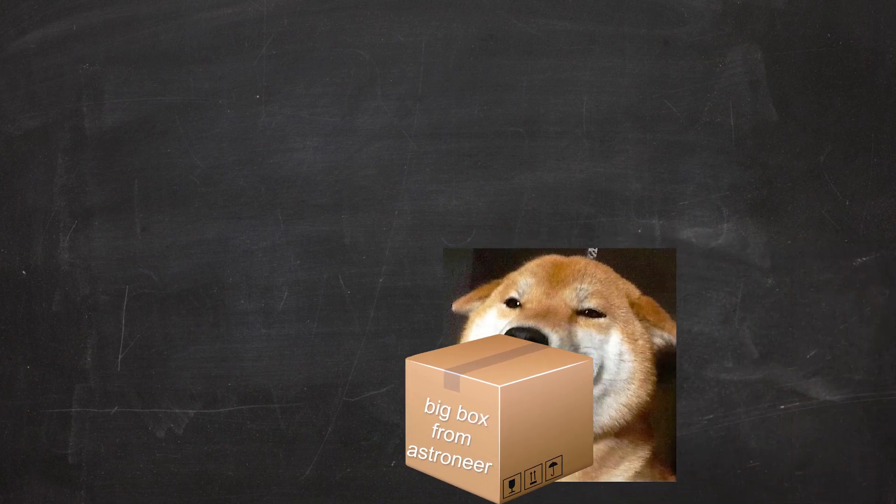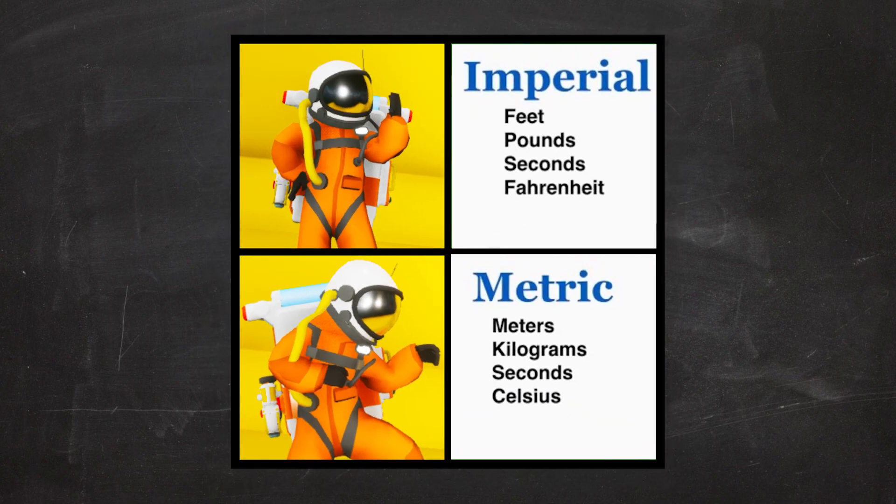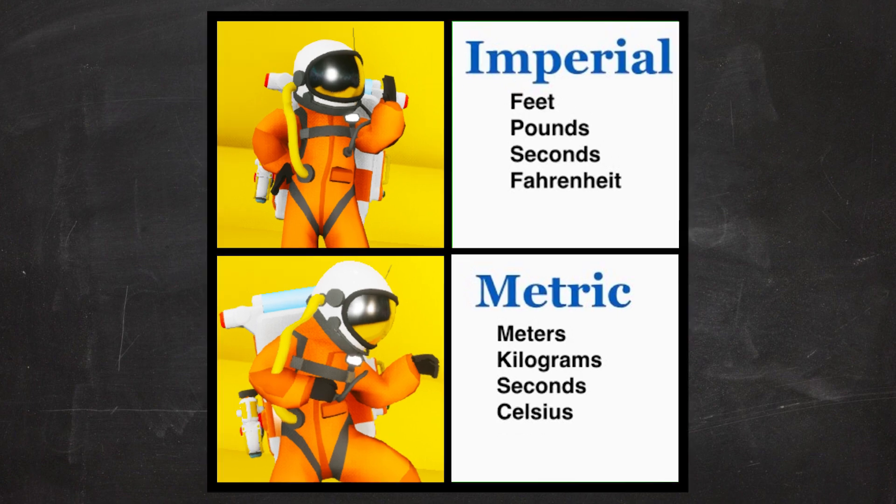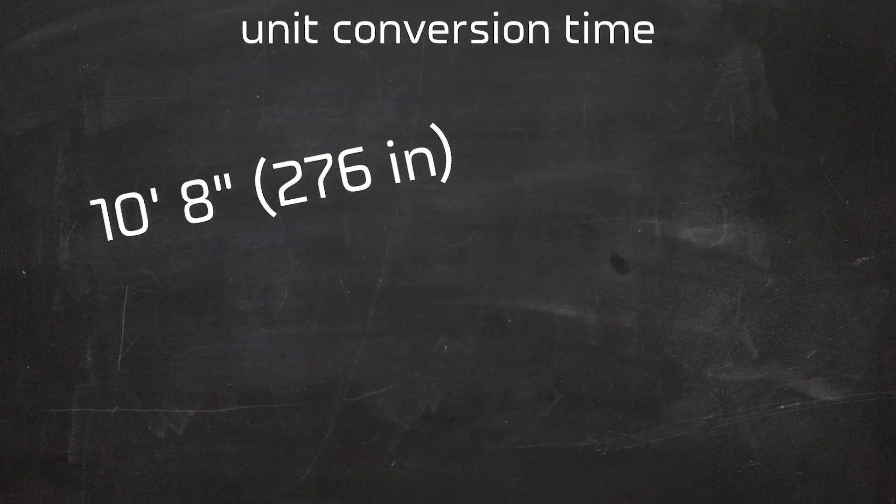Using our new ruler, we can now measure the size of the planets using speed, time, and distance. And from now on, to make things much easier in the long run, I will be using meters instead of feet and inches. So, 10 feet and 8 inches in meters is about 3.25 meters. Knowing this, we can do a lot.